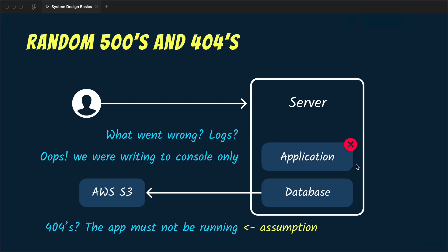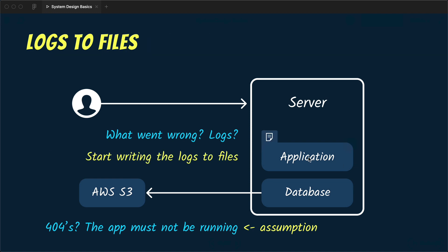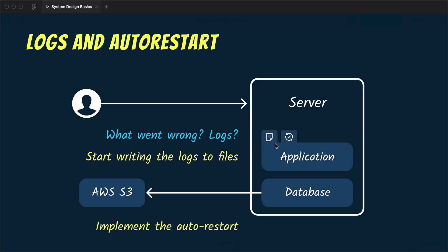To fix the issue you restart the server and the application is back up. You also improve logging so you're not just writing to standard output but also writing to files, so whenever the application goes down you can access the logs from files. Additionally, you implement auto-restart logic so whenever the application goes down it comes back up automatically and users don't have to wait. You can do this with process managers such as PM2, systemd, or Upstart, which keep watching a process and bring it back up whenever it goes down.